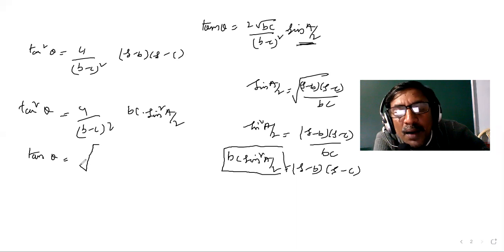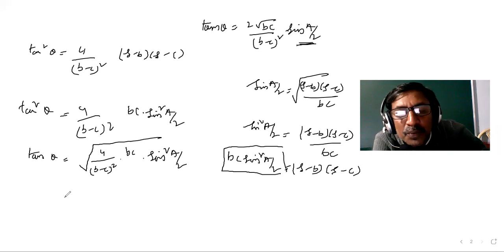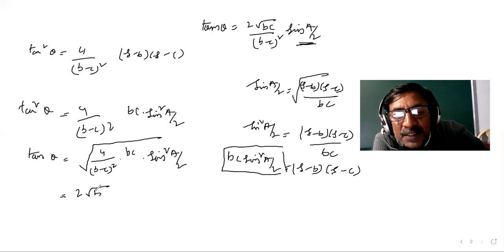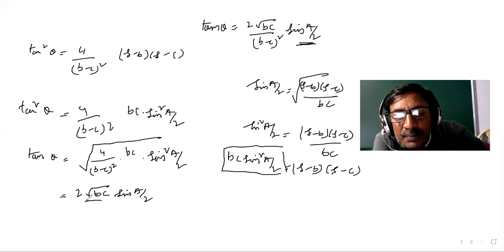So tan theta is equal to root over 4bc·sin²(A/2) divided by (b minus c) whole square, which gives tan theta equals 2√(bc)·sin(A/2) / (b minus c). This is a very very important problem.